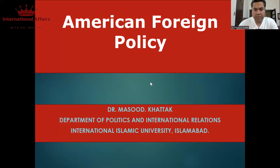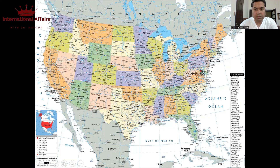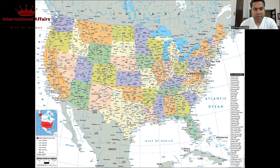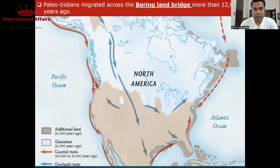Let's quickly analyze. First of all, the United States of America is a leading country at the moment. If you look at the landmass of the United States of America, it's a huge country covered with huge maritime boundaries and very important borders with Canada and Mexico.